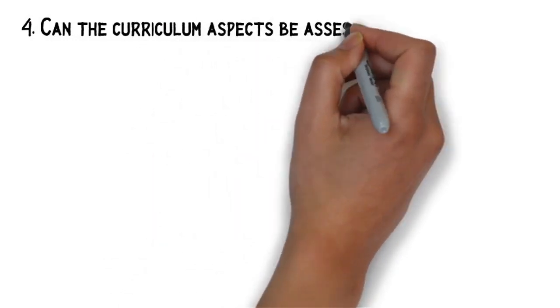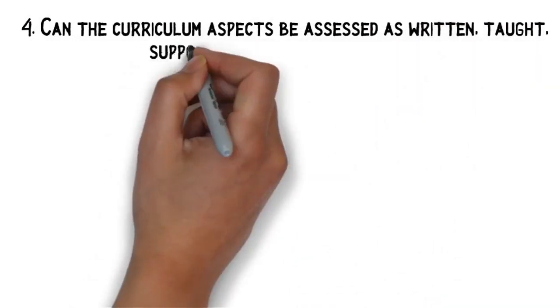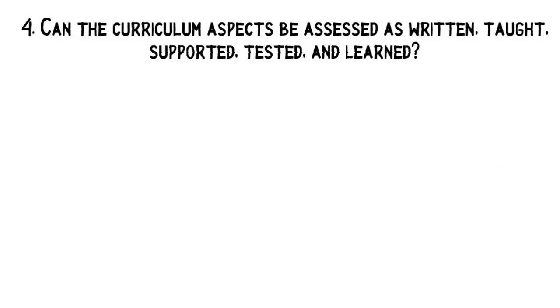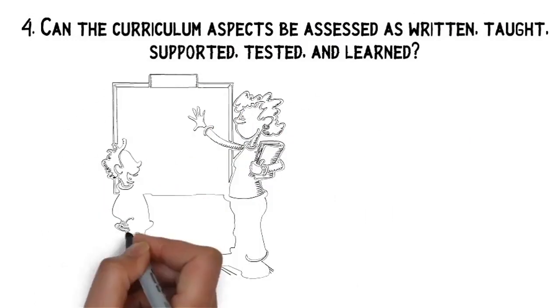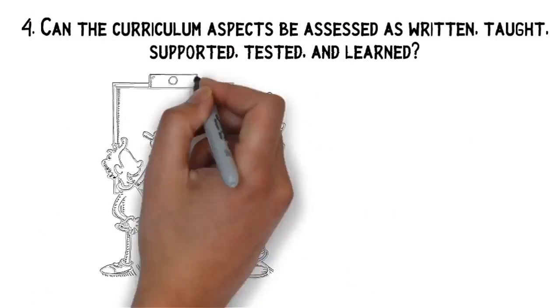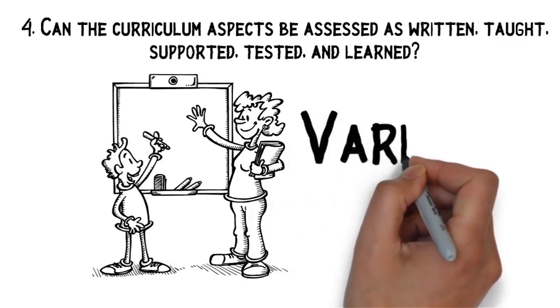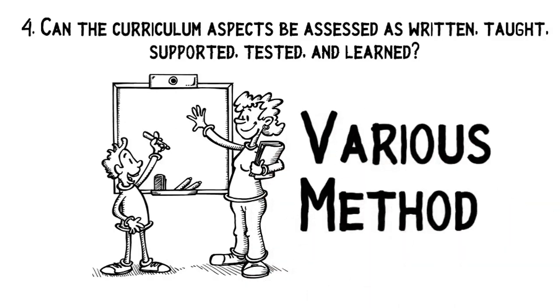Number four, can the curriculum aspect be assessed as written, taught, supported, tested, and learned? Curriculum may not only be assessed in one method. You need to cater the diverse learning ability of the learners.